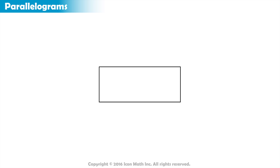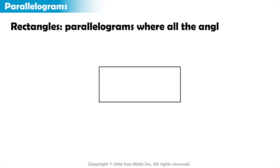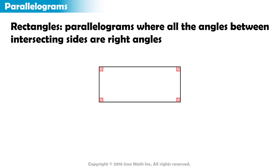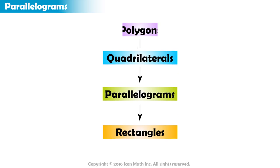As you might remember, rectangles are parallelograms where all the angles of the intersecting sides are right angles. In order for a shape to be a rectangle, it must satisfy all the properties of parallelograms, quadrilaterals, and polygons.